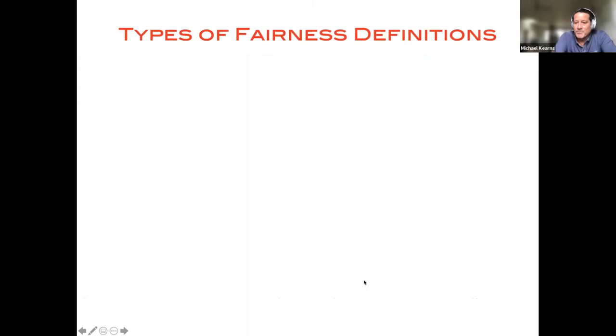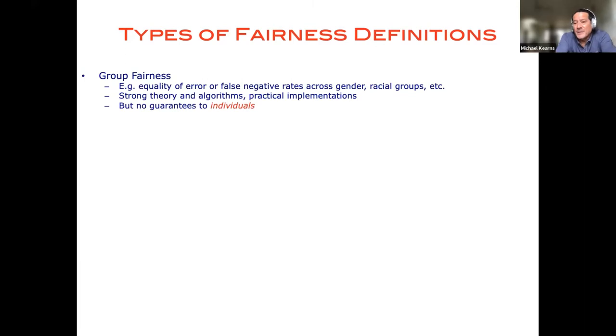Okay, so just a whirlwind tour of the burgeoning field of fairness research in machine learning, statistics and related fields. To a crude first approximation, there are essentially two types of fairness definitions that have been considered in the literature. The vast majority of them are what you would call group fairness notions.